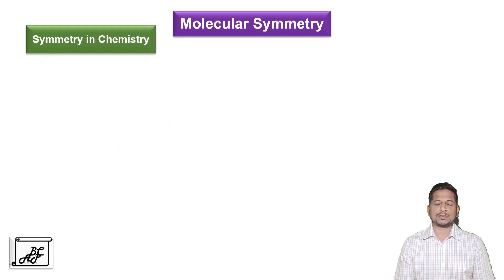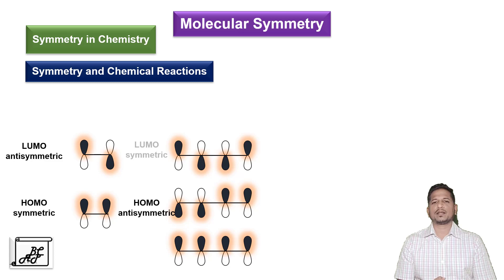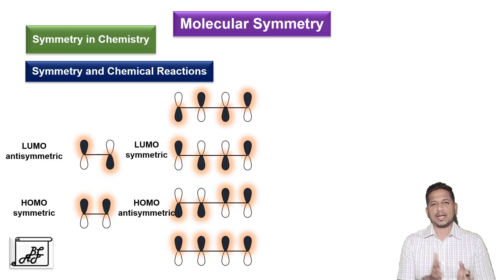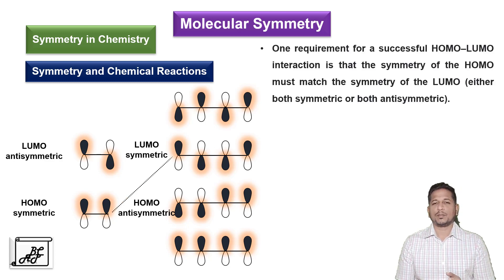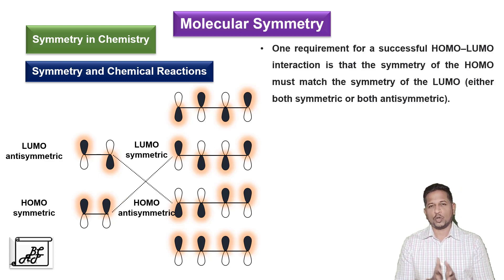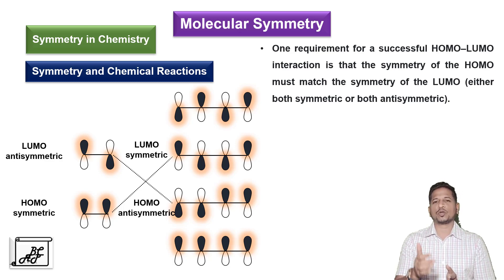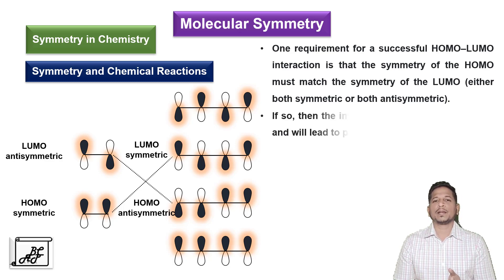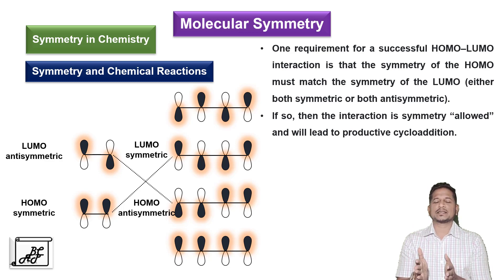Molecular symmetry also helps to understand the course of chemical reactions. For example, if we consider a cycloaddition reaction between ethene and butadiene, it is very important to match the symmetry between HOMO and LUMO. HOMO means highest occupied molecular orbital and LUMO means lowest unoccupied molecular orbital. If HOMO of one molecule matches its symmetry with LUMO of other molecule, a chemical reaction can occur.